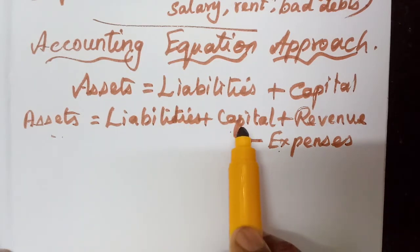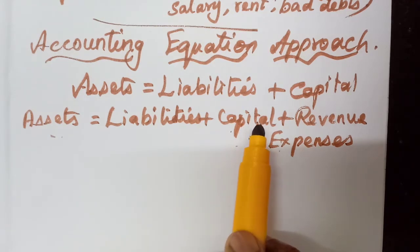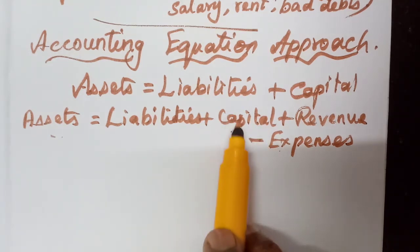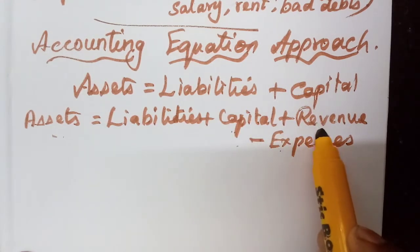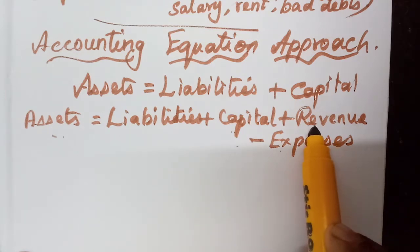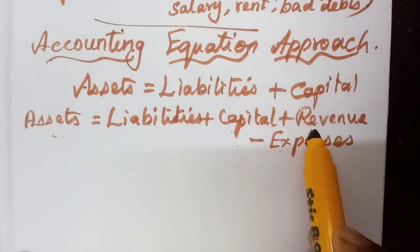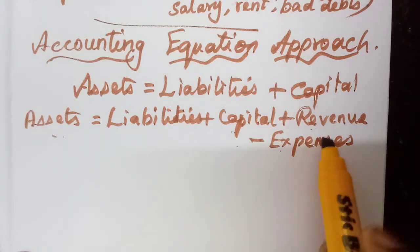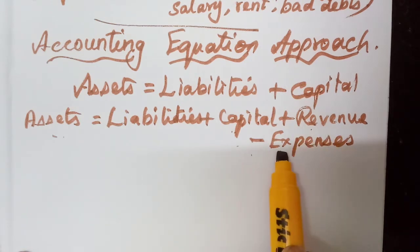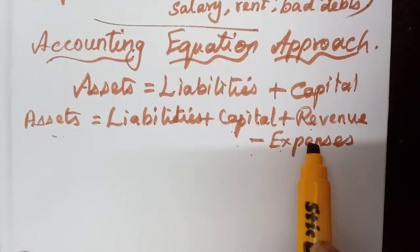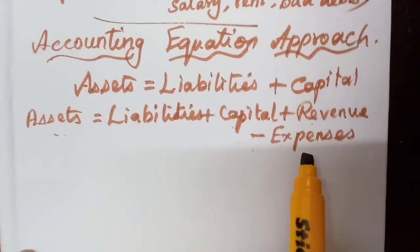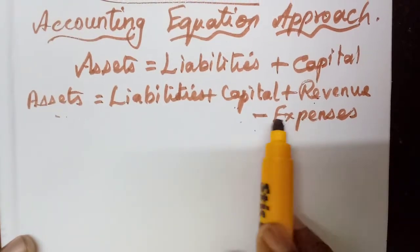Capital is also a liability, but it is the amount owed by the business to the owner. Then, revenue means all the income — sale proceeds, whatever we sell in the business, and any other income received. Expenses are all the costs and losses: whatever we spend in order to sell goods or run the business, and any loss incurred — all these are called expenses, so we need to deduct them.